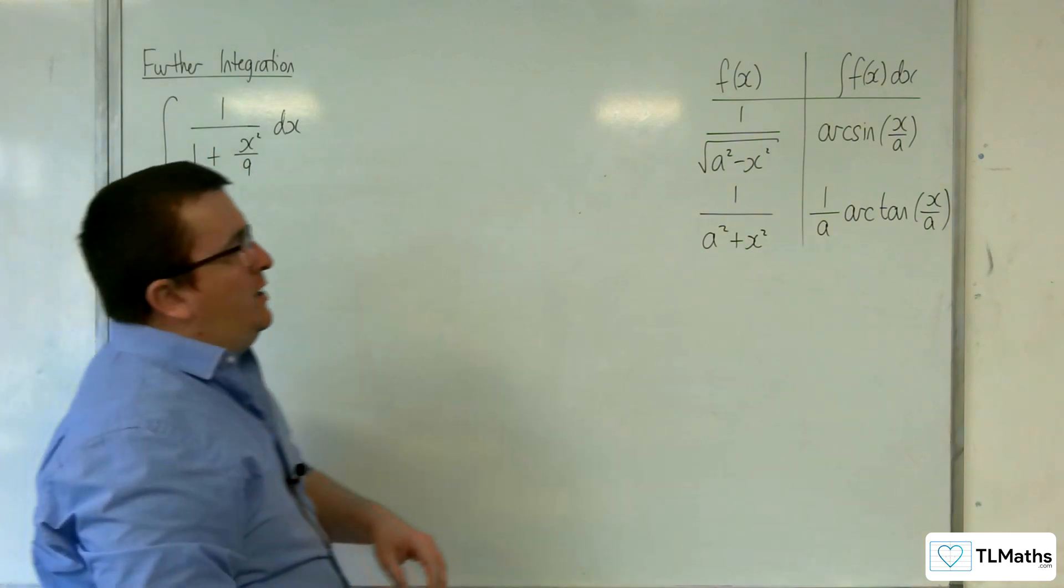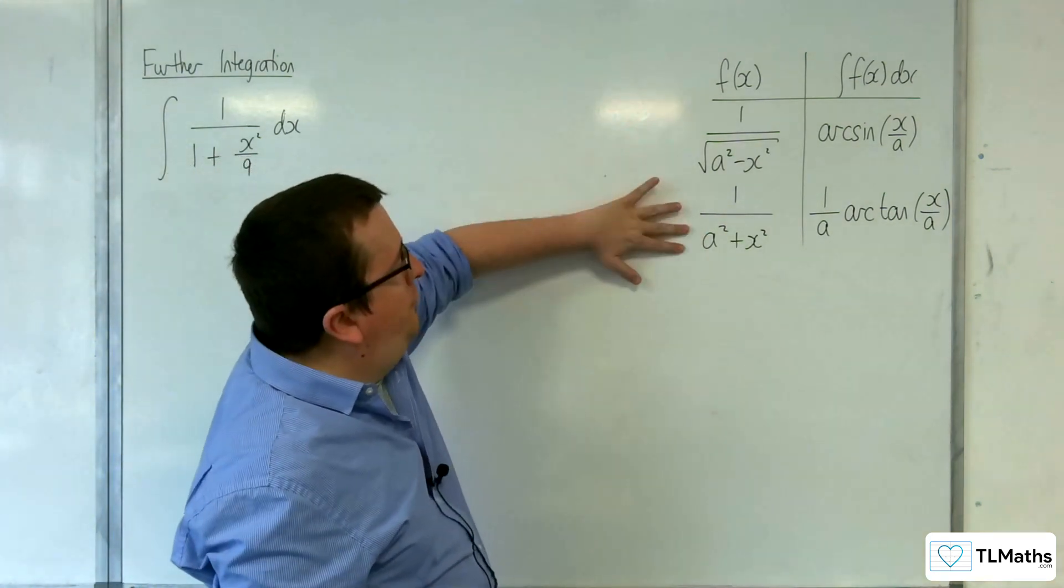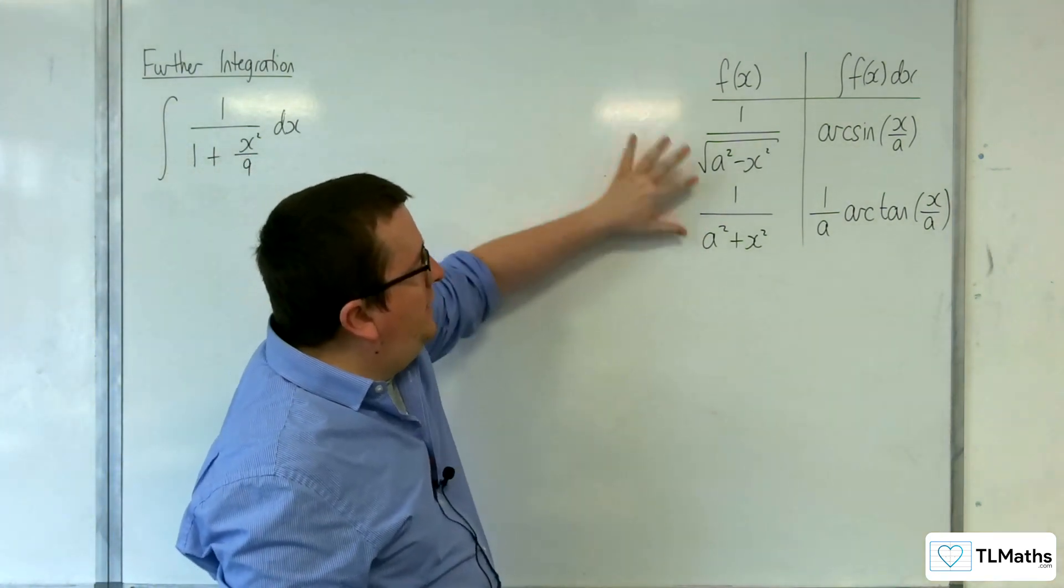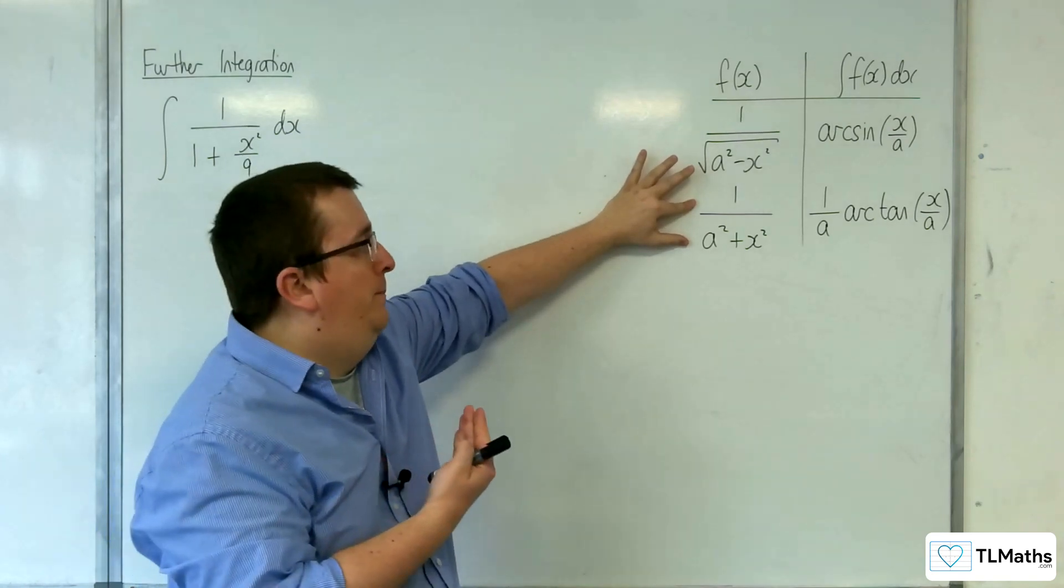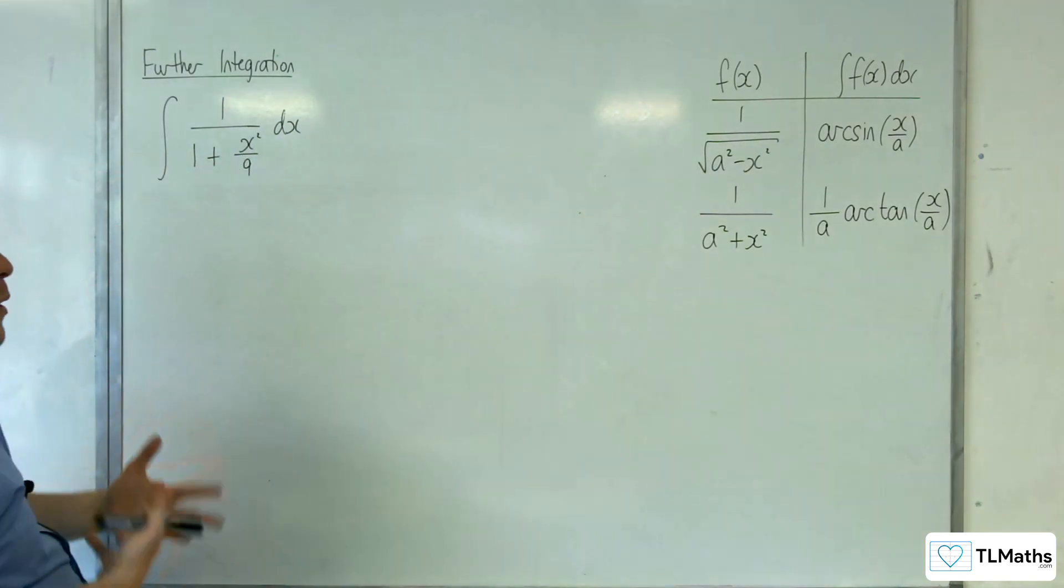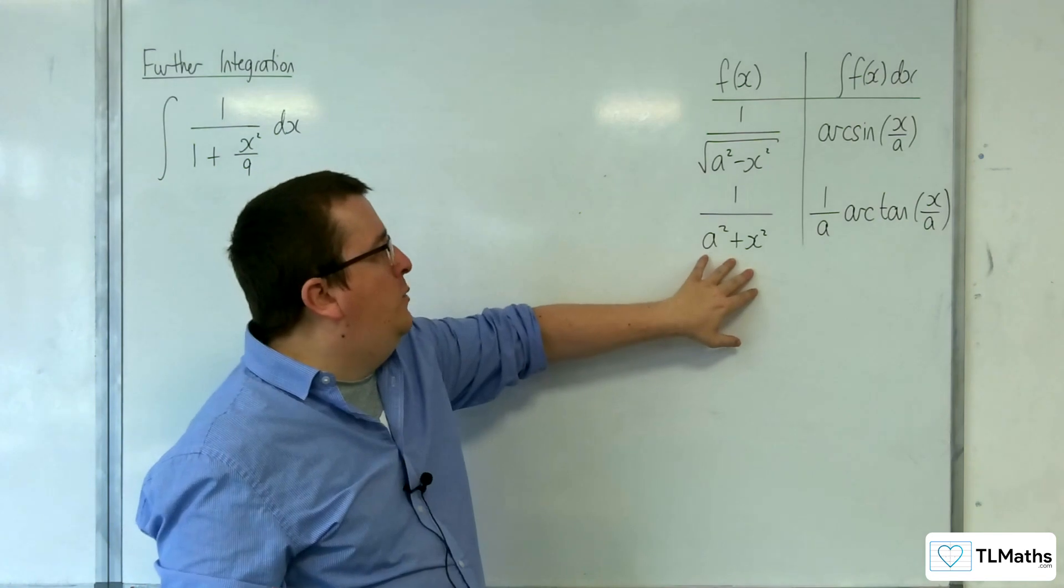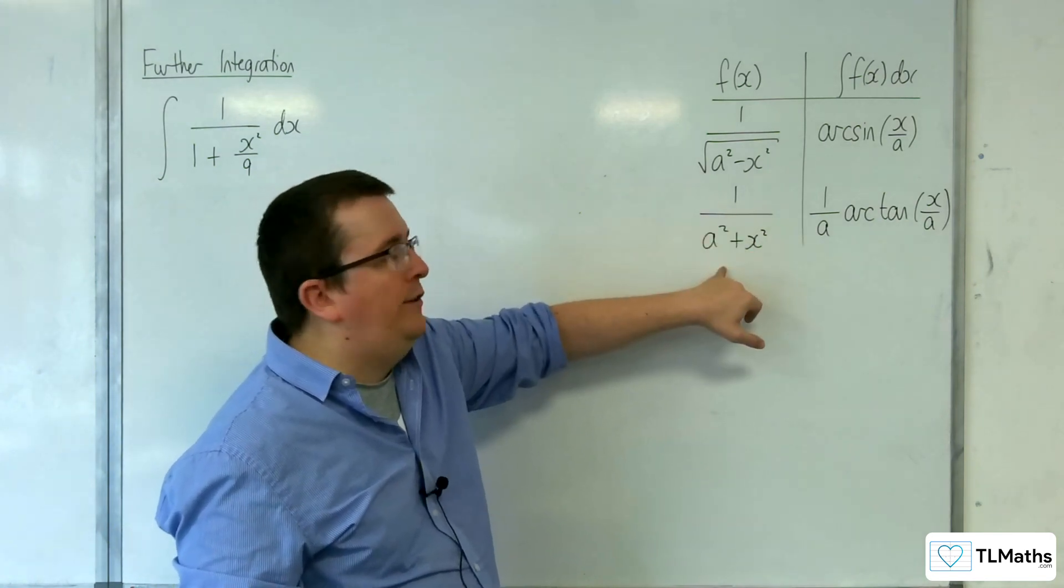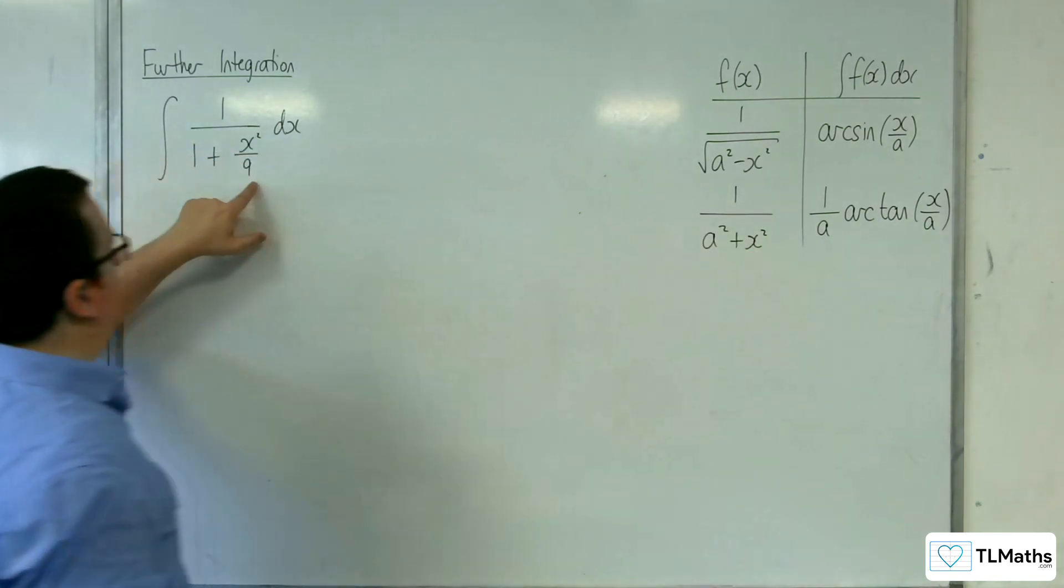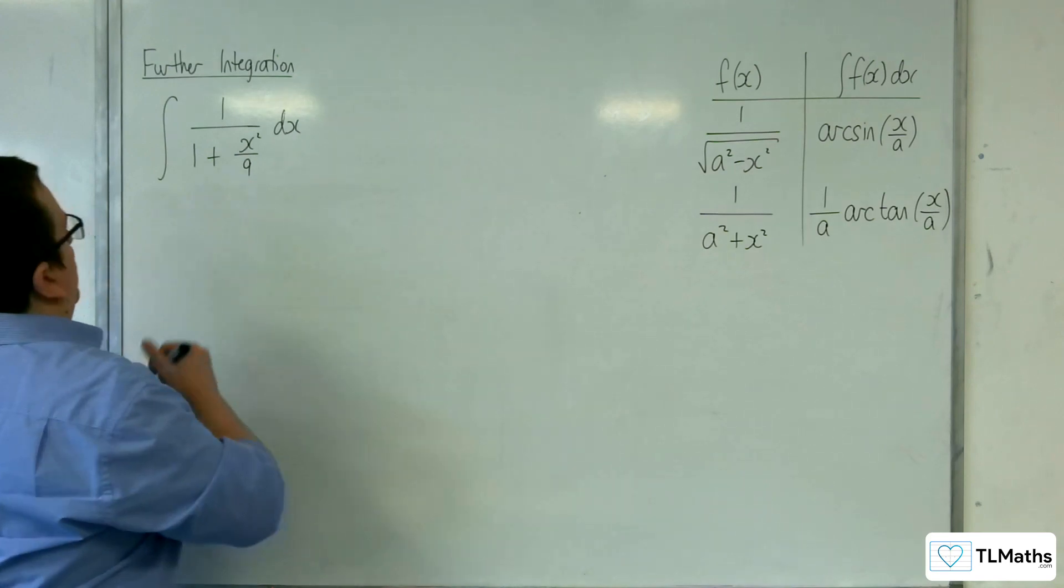The trick is to make sure you can spot the correct format. It's definitely this one because we don't have the square root. Now, it's not quite in the nice format that we want because it's not 1 over a squared plus x squared—we've got x squared over 9 here.